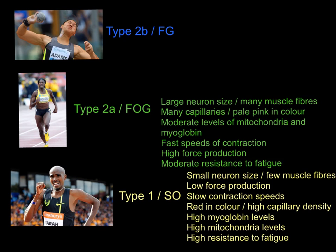By comparison, Type 2a or fast oxidative glycolytic (FOG) fibers have key differences. I've put a picture of Christine Ohuruogu doing the 400 meters here — equally an 800-meter runner uses a high number of FOG fibers. You can see by the build of Christine Ohuruogu versus Mo Farah that she has a lot more FOG fibers. The reason she's bigger is because Type 2a fibers have large neuron size — many muscle fibers attached to each motor unit — producing a stronger contraction.